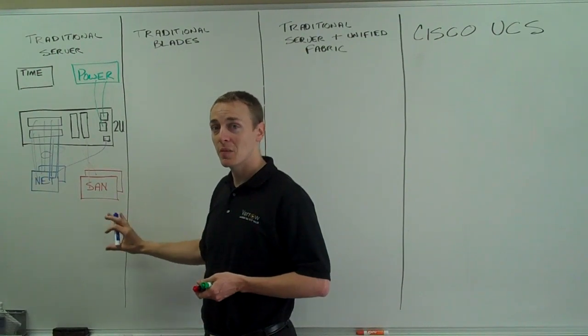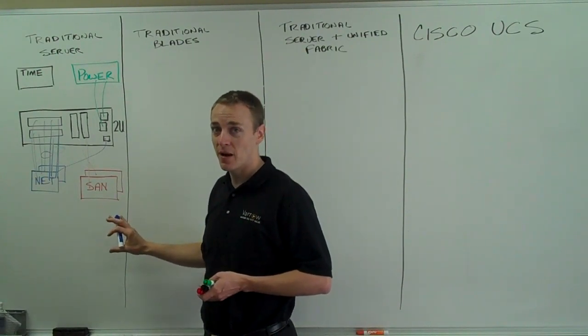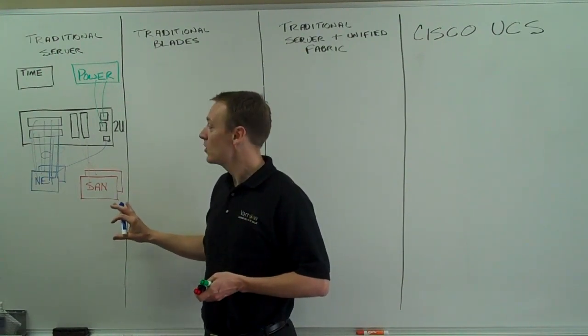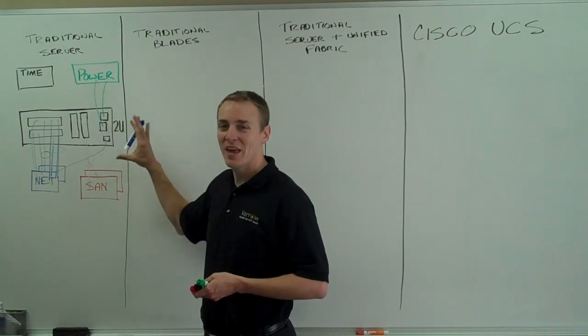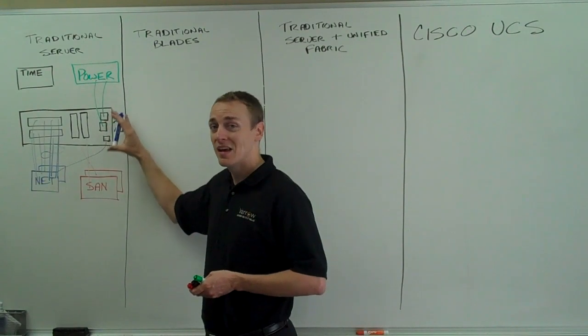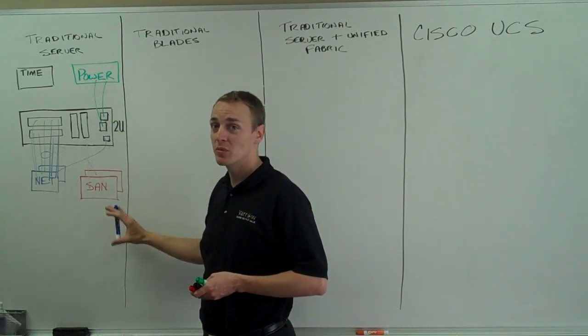21 of those in a rack, if you could fit 21 in a rack - a 42U rack - would be 273 cables. So while this is okay at small scale, at large scale you can imagine this is extremely complex.